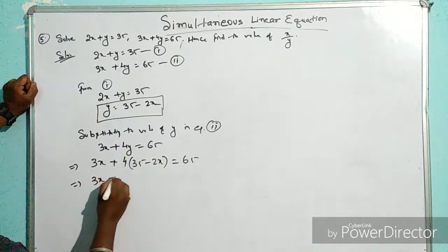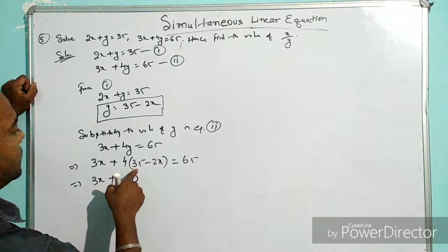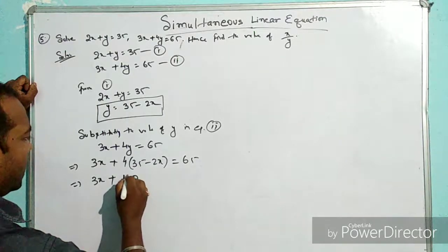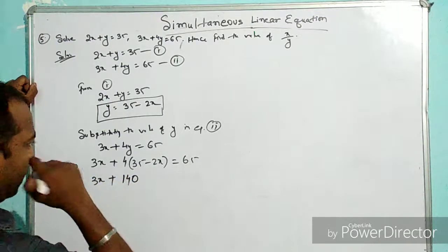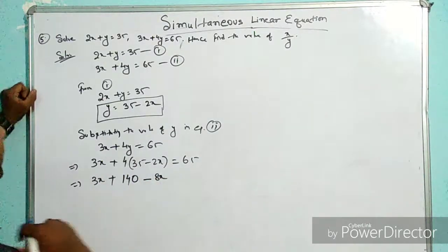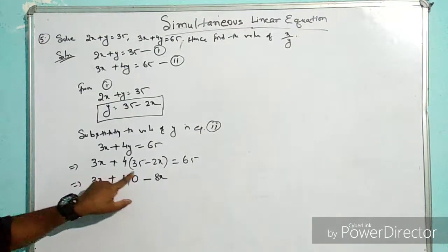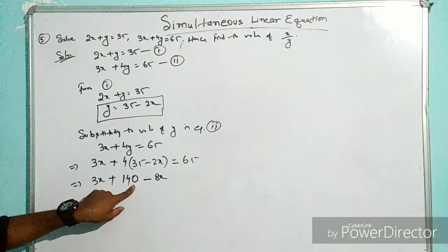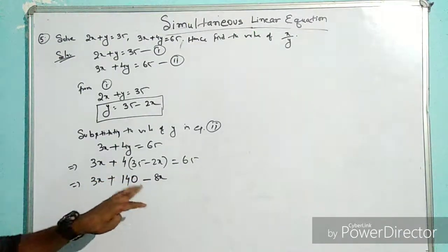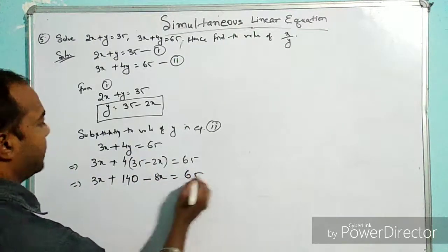Expanding: 3x + 140 - 8x = 65. Let me check if the calculation is correct. 4 times 35 is 140, and 4 times 2x is 8x, so this is correct.